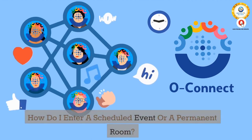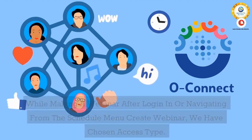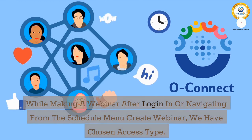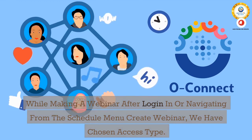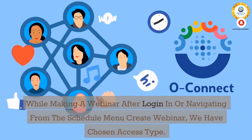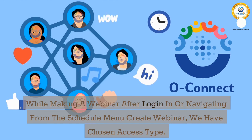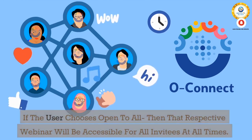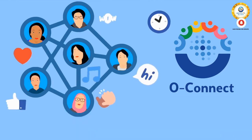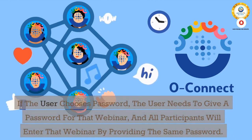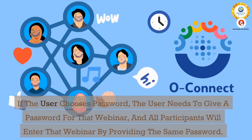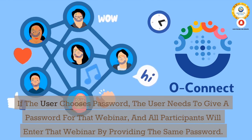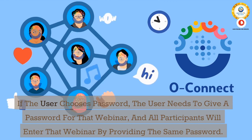13. How do I enter a scheduled event or a permanent room? While making a webinar after logging in or navigating from the schedule menu — create webinar — you can choose an access type. If the user chooses 'open to all,' that webinar will be accessible for all invitees at all times. If the user chooses 'password,' all participants will enter that webinar by providing the same password.